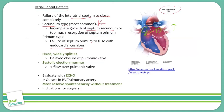To identify these patients, a fixed widely split S2 is a very classic symptom of ASD. In normal physiology, when you take a deep breath, you have a drop in intrathoracic pressure, resulting in increased venous return through the vena cava into the right atrium, increased volume into the right ventricle, and increased blood pumped out into the pulmonary artery. That increased volume takes longer to pump out, so the pulmonic valve closes later than the aorta, causing a splitting of the S2.